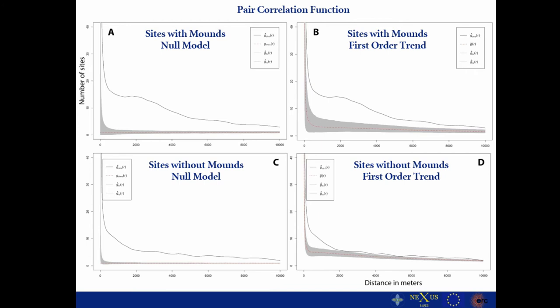In order to test how much the point process model — the correlation between the environmental variables and the site distribution — is affecting the actual site distribution, we carried out some pair-correlation functions. For the sites with mounds, when we calculate the null model, we have a high cluster at smaller distances that then goes to regularity as distances between sites increase. But the first-order trend — the point process model — has absolutely no influence on the site distribution. On the opposite side, for the sites without anthropogenic mounds, there seems to be some influence from the environmental variables on the actual regional site distribution.